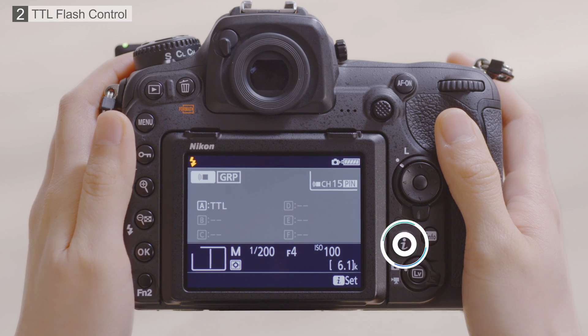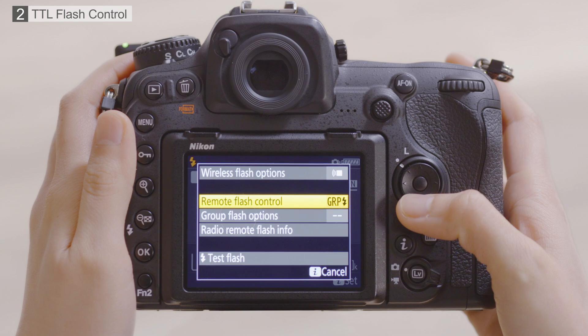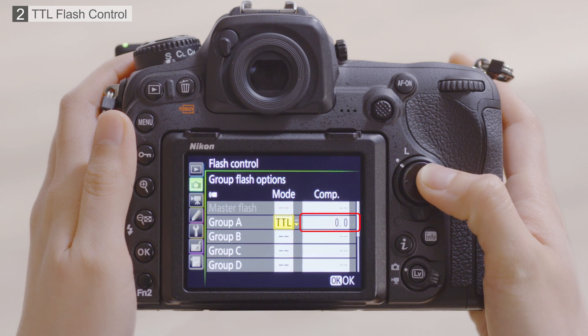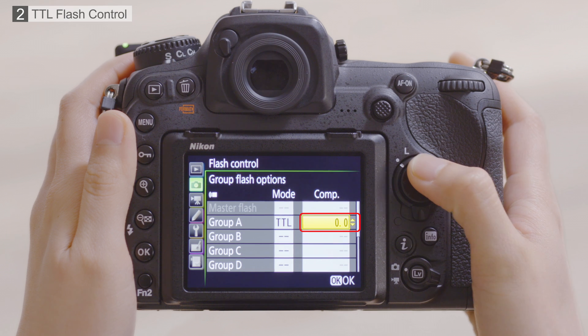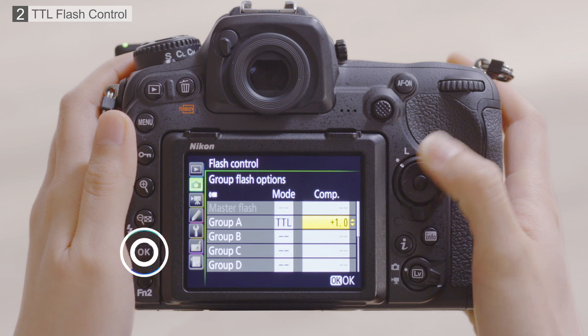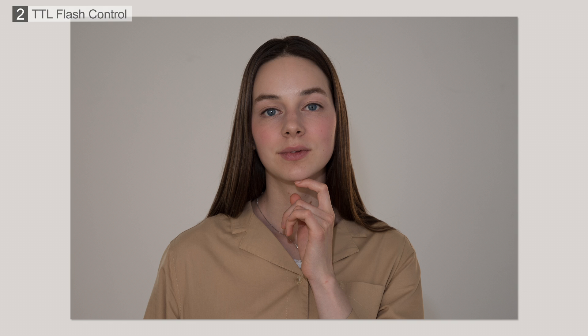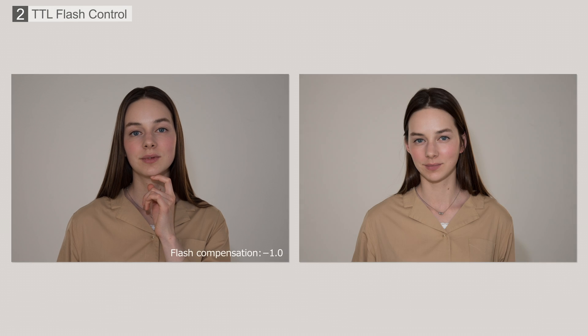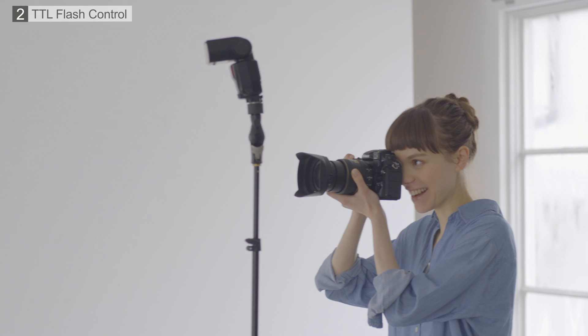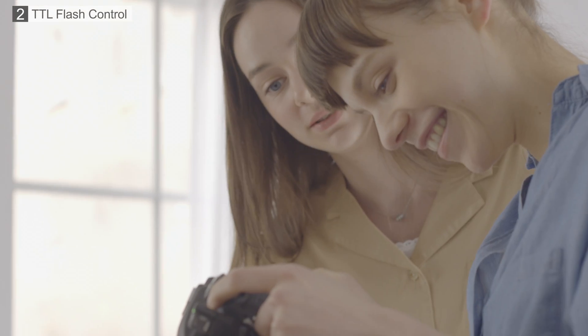To adjust flash compensation, highlight flash compensation in the group flash control settings area of the flash info display. Press the multi selector up or down to highlight a flash compensation amount and press OK to select. Higher values make the subject appear brighter, while lower values make it seem darker. Enjoy wireless off-camera flash photography using TTL mode for automatic flash level adjustment.